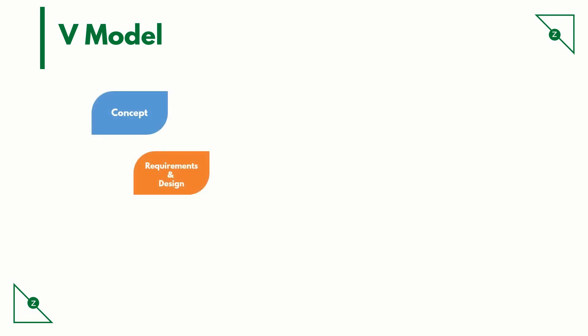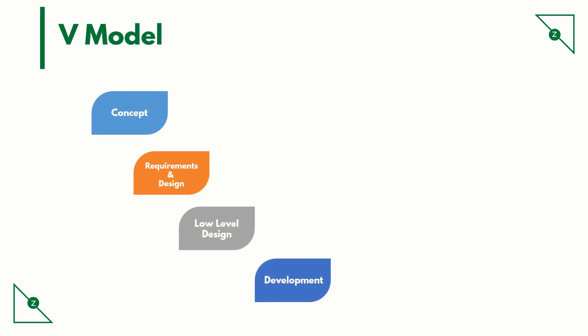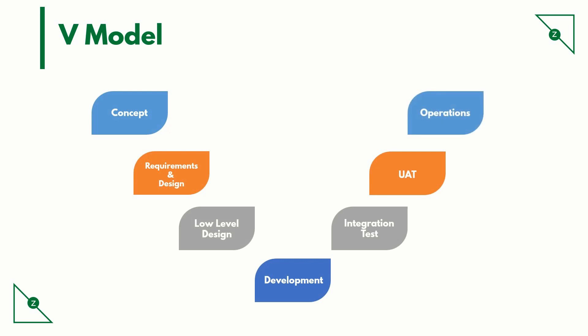The V model. The V model is an SDLC model where execution of processes happens in a sequential manner in a V shape. It is also known as a verification and validation model. It is an extension of the waterfall model, based on the association of a testing phase for each corresponding development stage. This means that for every phase in the development cycle, there is a direct association with a testing phase. As you can see, the corresponding testing phase of each development phase is planned in parallel — verification phases on one side of the V and validation phases on the other. The coding phase joins the two sides of the V model.